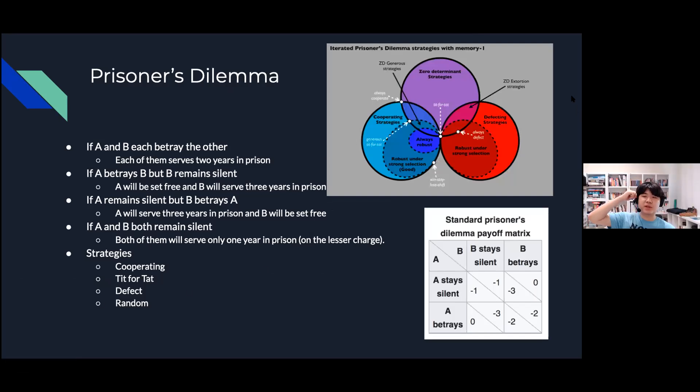One example of altruistic behavior that doesn't necessarily stem from just pure psychology is the prisoner's dilemma. In the prisoner's dilemma you're introduced to prisoners A and B who are offered a choice. They can either betray the other person or they can cooperate. If A and B both betray each other each of them serves two years in prison. If A betrays B but B remains silent then A will be set free and B will serve three years in prison and vice versa. However if A and B both remain silent both of them will serve only one year in prison on the lesser charge.